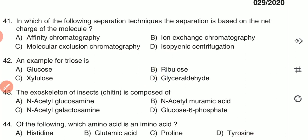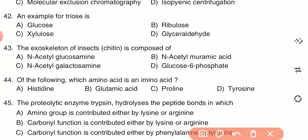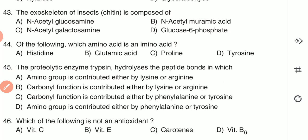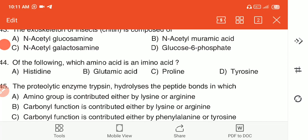Question 43: The exoskeleton of insects, that is chitin, is composed of — (A) N-acetyl glucosamine, (B) N-acetyl muramic acid, (C) N-acetyl galactosamine, or (D) glucose-6-phosphate. Chitin is composed of N-acetyl glucosamine — option A is the correct answer.